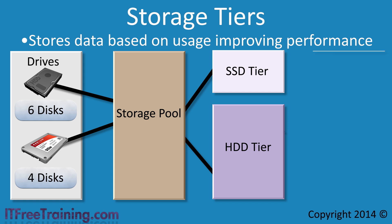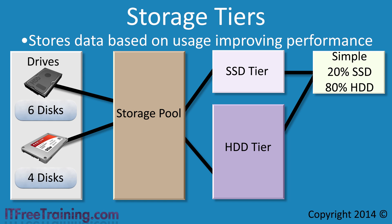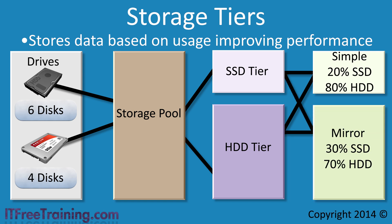In this example, a simple virtual disk and a mirrored virtual disk were created. Storage tiers currently does not support parity. When virtual drives are created, Windows will ask how much space should be used on the solid state tier and how much should be used on the hard disk tier. The administrator is free to choose this amount.